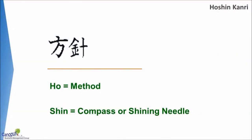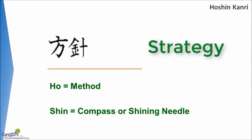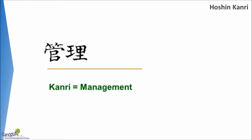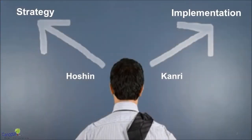So what is Hoshin Kanri? Hoshin Kanri are two Japanese words — Hoshin and Kanri. Hoshin itself is in fact a combination of two Chinese words, Ho and Shin. Ho essentially talks about something like method, and Shin is more like a compass — so we are talking about strategy, if I were to summarize that. And Kanri is the equivalent of management. So broadly, you could say Hoshin Kanri is strategy implementation or strategy execution.